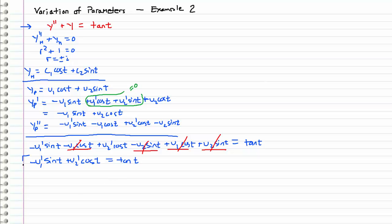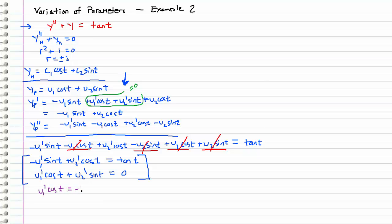This gives us our first equation, but we also have a second equation — the constraint we imposed earlier. That constraint is the key to solving this problem, because these two equations together let us solve for our two unknowns u1 prime and u2 prime. Taking the second equation and solving for u1 prime: u1 prime cosine t equals negative u2 prime sine t, so u1 prime equals negative u2 prime sine t over cosine t.